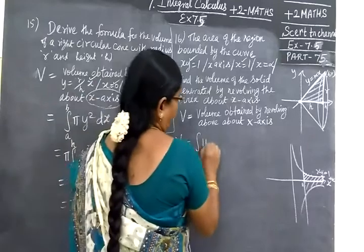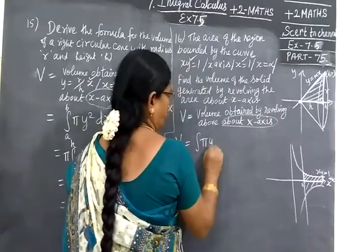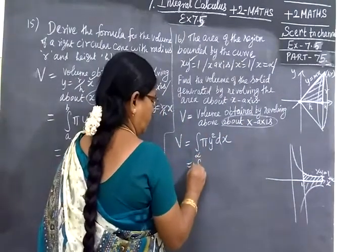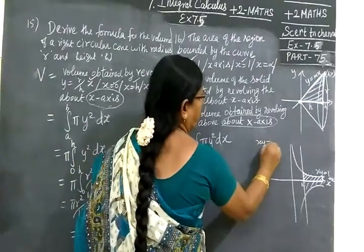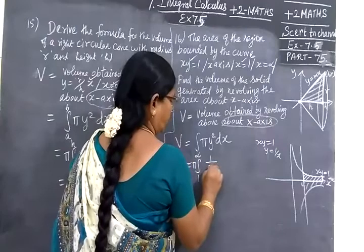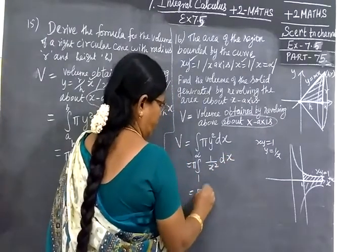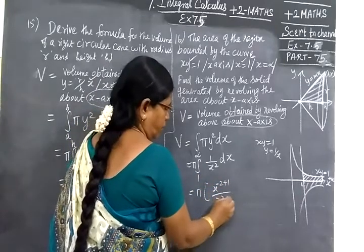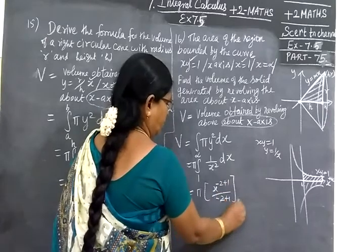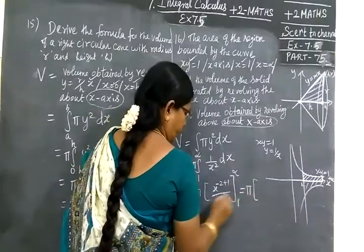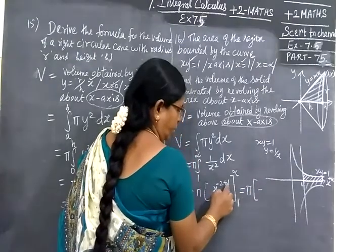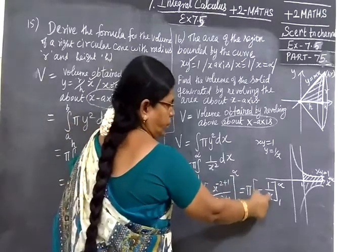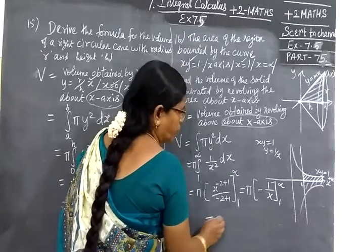V equals integral π, about the x-axis. π y² dx equals, the limit would be 1 to infinity. So 1 to infinity, y². xy equals 1, so y equals 1/x, so y² is 1/x² dx. So π integral from 1 to infinity of x⁻² dx, which is π times x⁻²⁺¹/(-2+1), limit 1 to infinity. So π times -1/x from 1 to infinity.